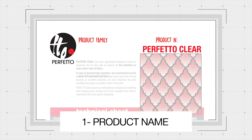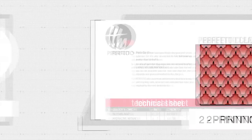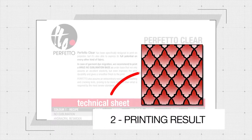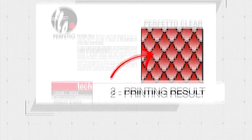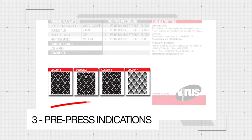The ink name and range are on the top of the TDS. Under the ink name you can see the printing result, and the film used to make the selected subject.